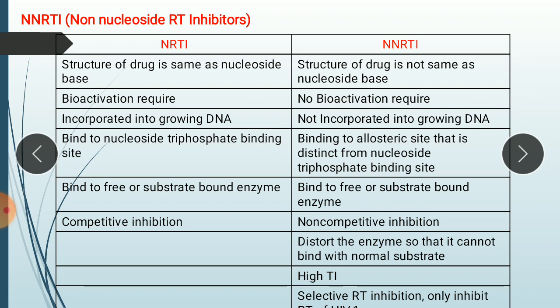The allosteric binding site is a different binding site — normally the substrate does not bind to the allosteric binding site. So NNRTI binds to the site where the normal substrate does not bind. This drug inhibits the reverse transcriptase enzyme whether it is free or bound to normal substrate.